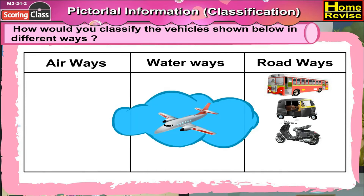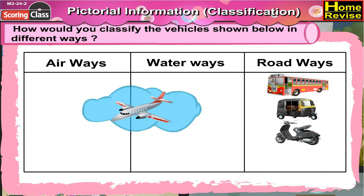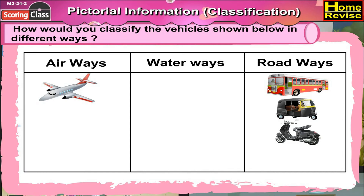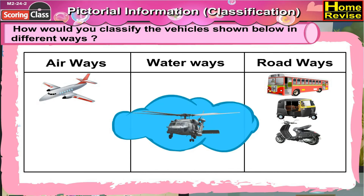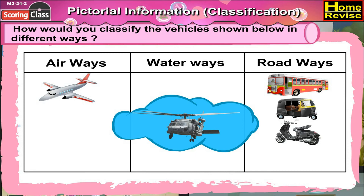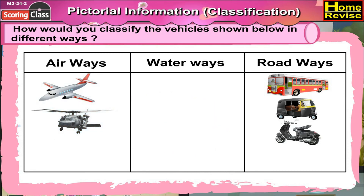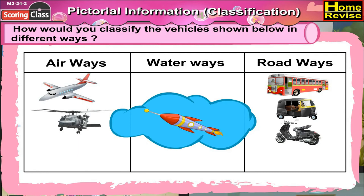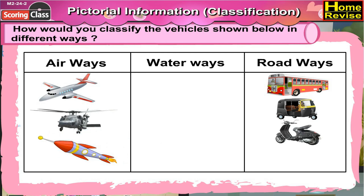How about an aeroplane? Yes, aeroplane flies in the air, so it goes under airways. What about a chopper? Chopper flies too, so it goes under airways. Rocket — that goes in the air too, so it goes under airways.